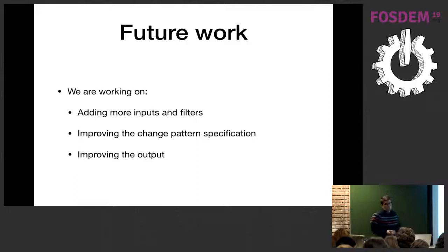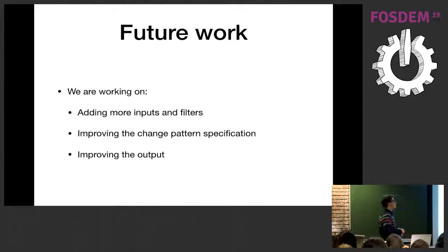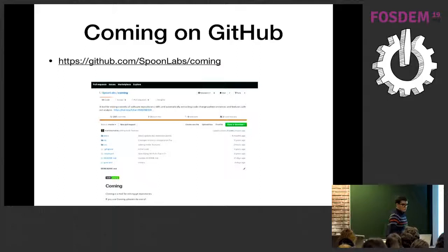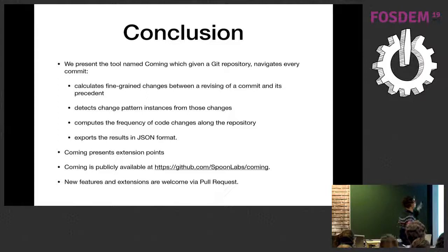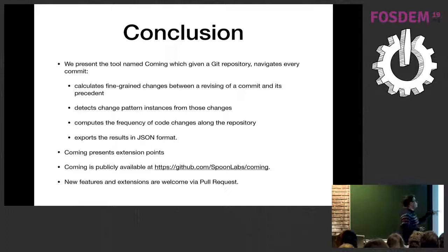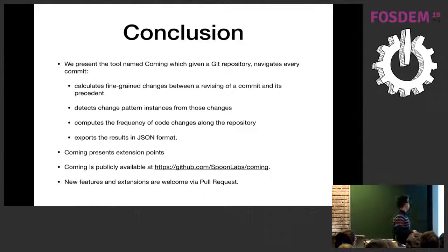For future work, we are working on adding new inputs and filters, improving the specification language which is currently quite simple, and improving the outputs. Coming is available on GitHub with instructions on how to extend it and usage examples. In conclusion, Coming is a tool for analyzing fine-grained changes between two revisions. It allows mining instances of code changes specified in XML, and exports results in JSON format. The code is publicly available and we welcome pull requests and comments.